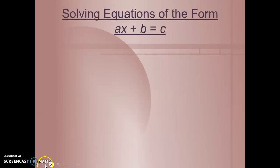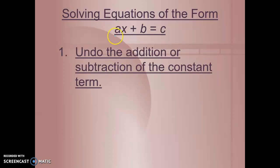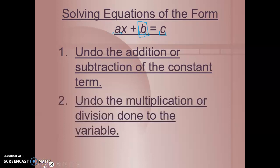Now, let's look at this equation. ax plus b equals c. When we're solving equations in this form, a, b, and c are numbers. x is our variable. So step one, we're going to undo the addition or subtraction of the constant term. The number that's all by itself. We're going to undo it. So if it's a positive number, we'll subtract it. If it's a negative number, we'll add it.